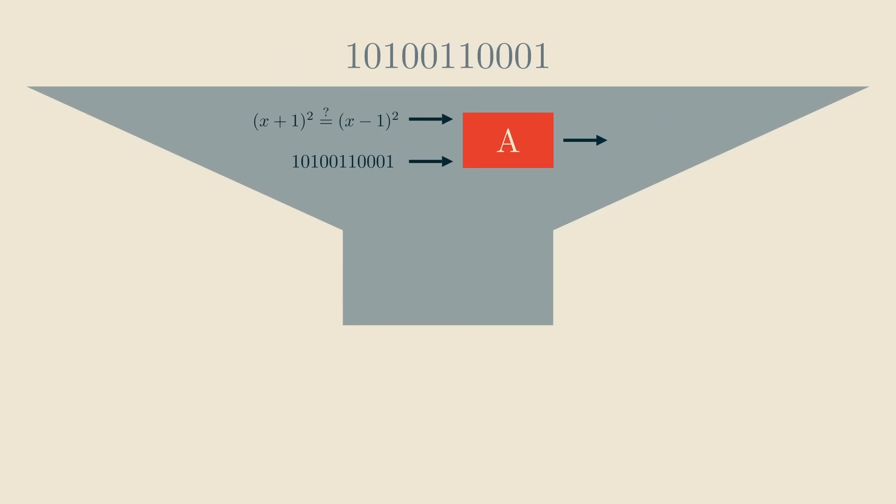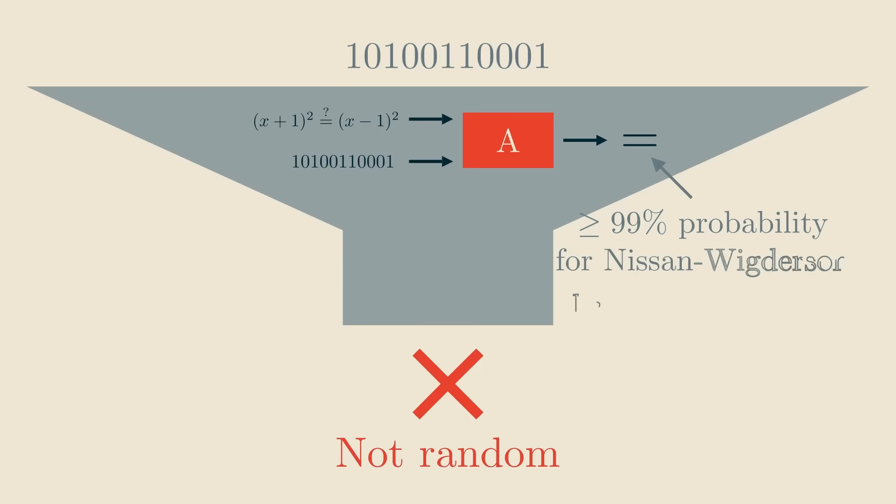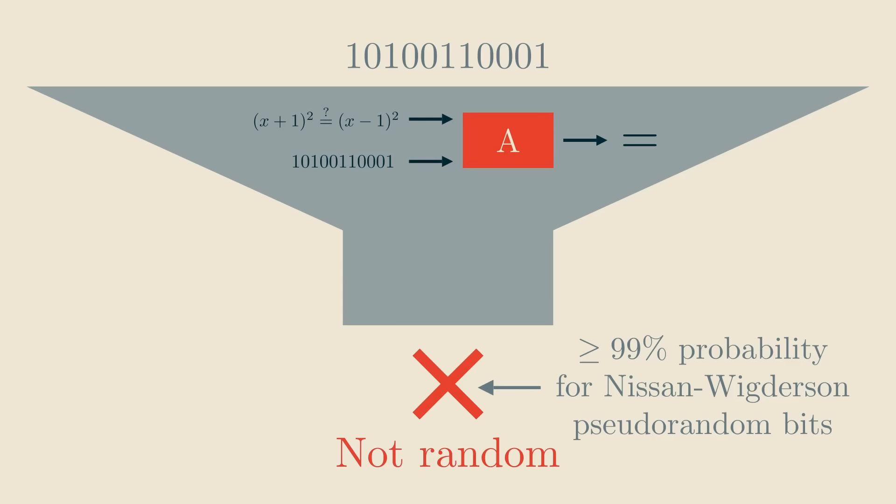And if A incorrectly answers that the two expressions are the same, the test answers that the bits are not random. And we assumed that on this input, the Nisan-Wigderson pseudorandom bits make A answer incorrectly with at least 99% probability, so our test correctly classifies these bits as not random.